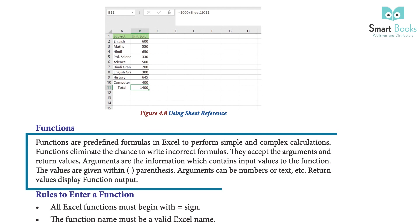Functions are predefined formulas in Excel to perform simple and complex calculations. Functions eliminate the chance of writing incorrect formulas. They accept arguments — information containing input values to the function. Arguments are given within parentheses and can be numbers, text, etc. Return values display the function output.